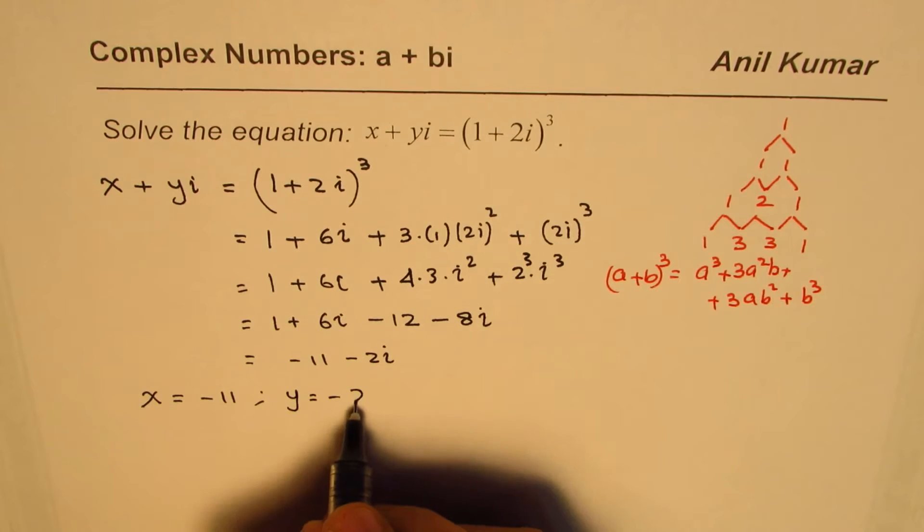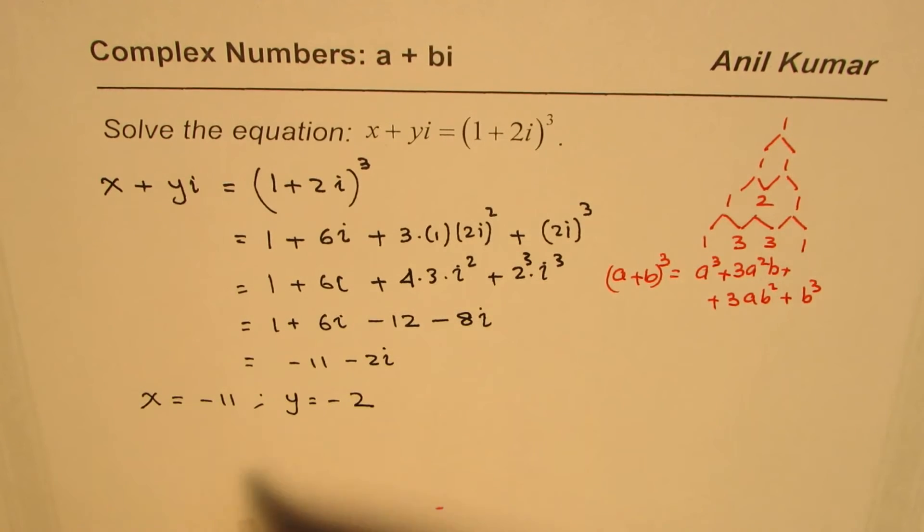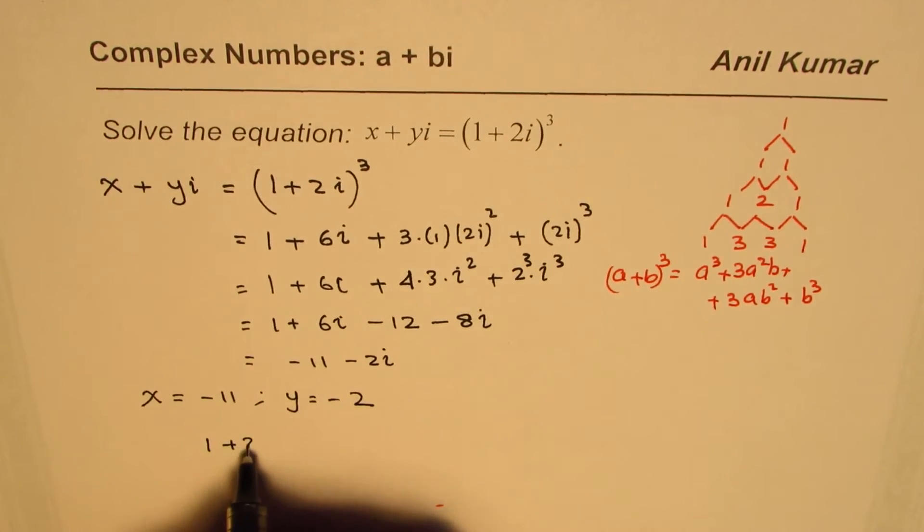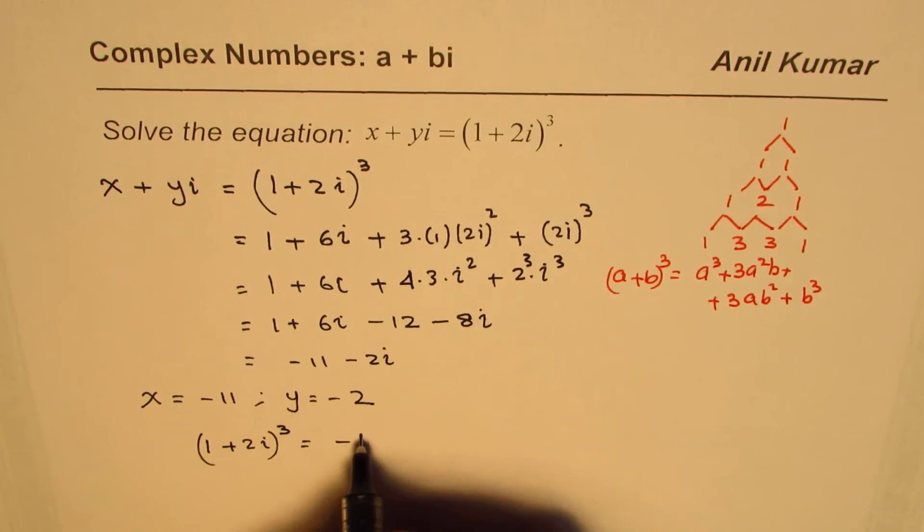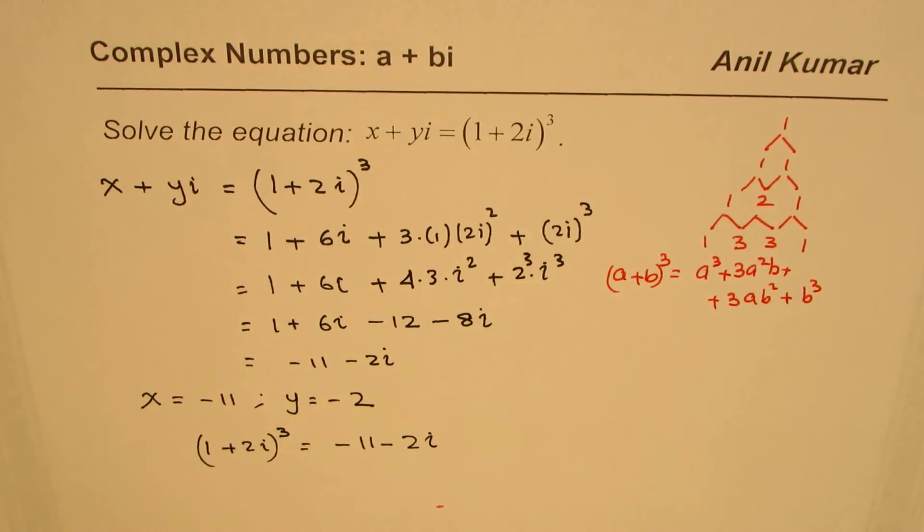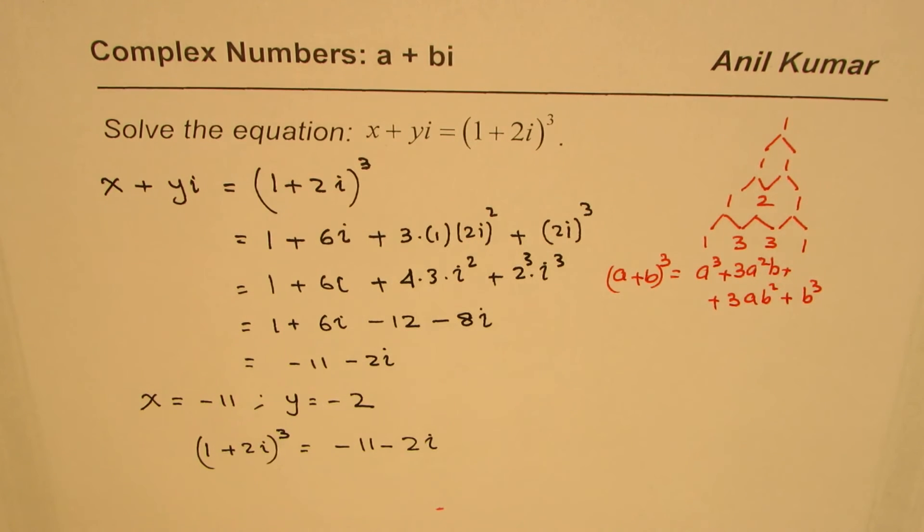So that is how we can solve this equation and we can write (1 plus 2i)³ as equal to -11 - 2i. That is how you can actually expand the cube of a complex number and combine the terms to write it as a complex number in the form x plus yi. I hope that helps, thank you and all the best.